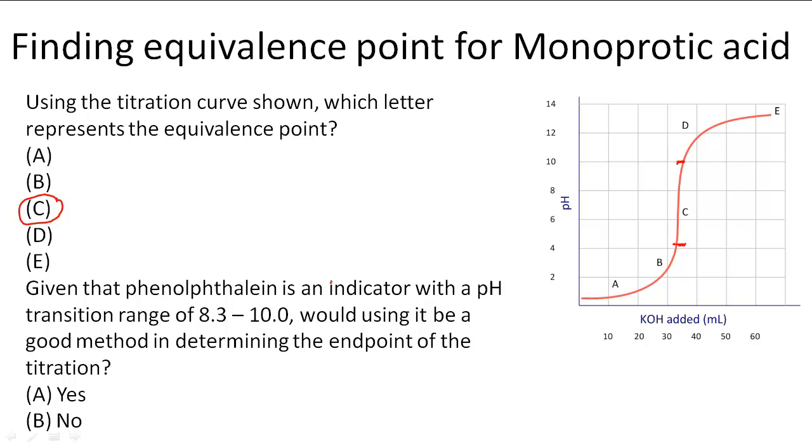Now the second part says given that phenolphthalein is an indicator with a pH transition range of 8.3 to 10.0, would using it be a good method in determining the endpoint of the titration? So because the range is from 8.3 to 10,